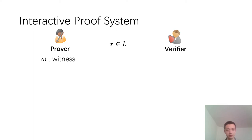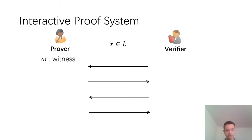Recall that in an interactive proof system, there is a prover and a verifier. The prover tries to convince the verifier that some statement x is in an NP language L. To achieve this, the prover needs to interact with the verifier using the witness ω of the statement x. At the end of the interaction, the verifier decides to accept or reject.